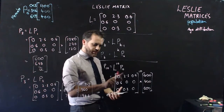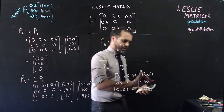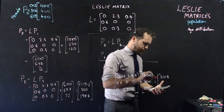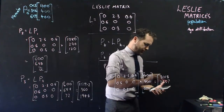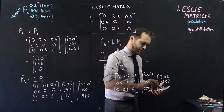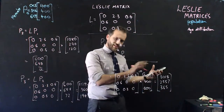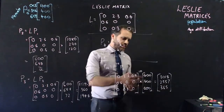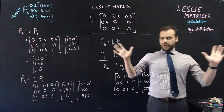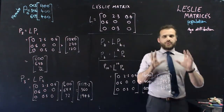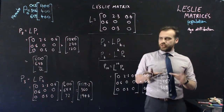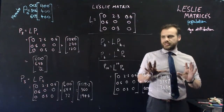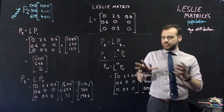Doing the matrix to the power of 10 times the initial population gives a new population vector of approximately [3018, 2557, 365] — there are some rounding errors, but the population is clearly growing with quite a few young ones. This video is long enough now. We have looked at Leslie matrices, and hopefully you understand how to set up a Leslie matrix, why it works, and some of the constraints.